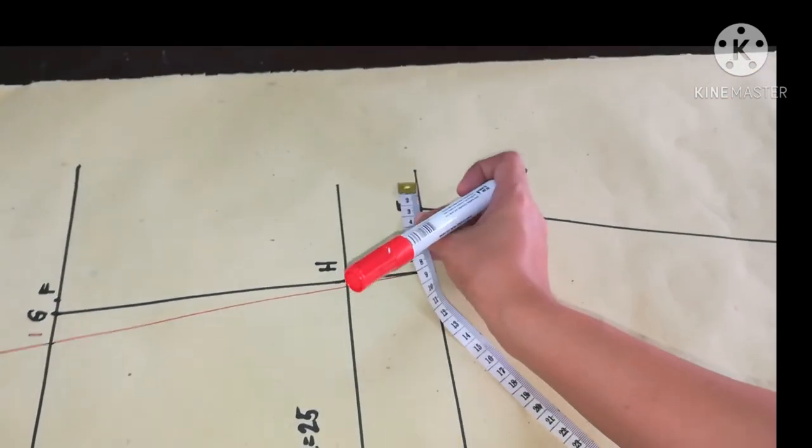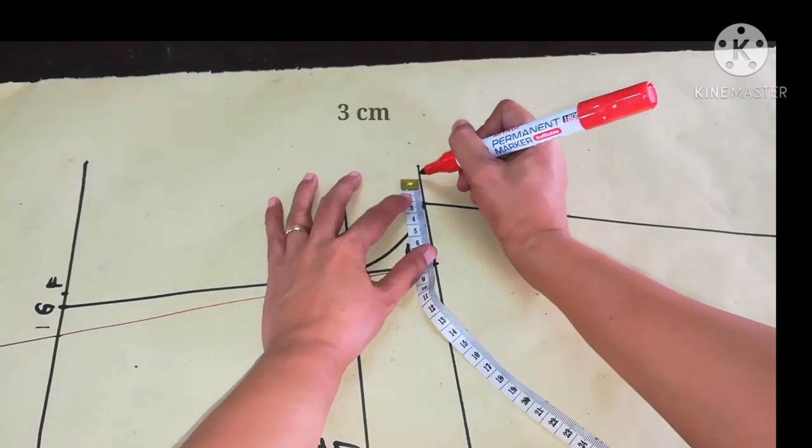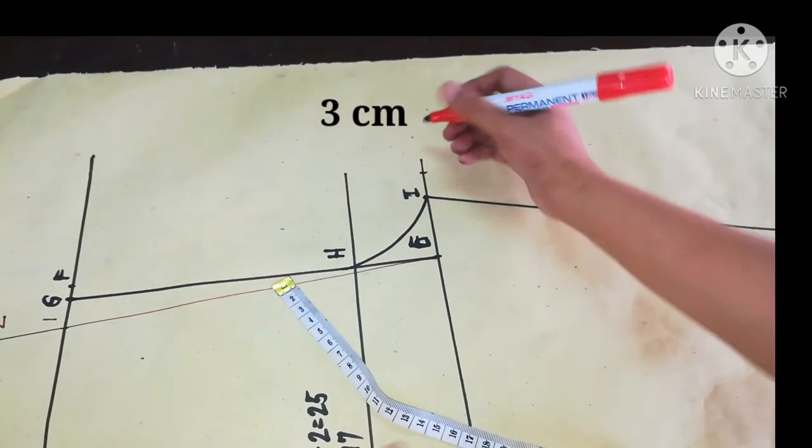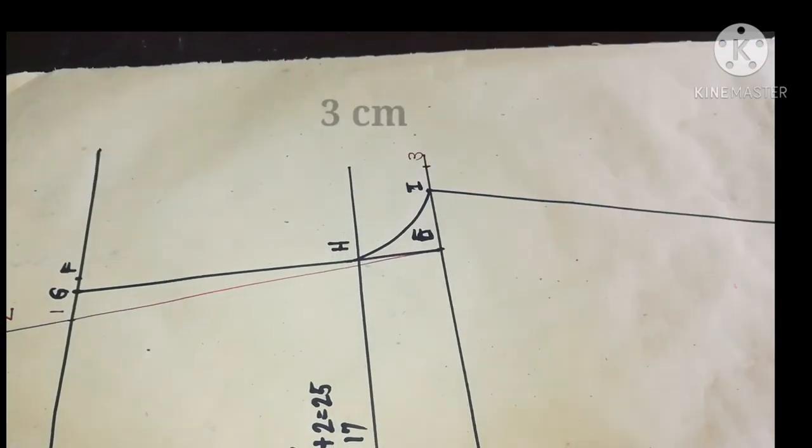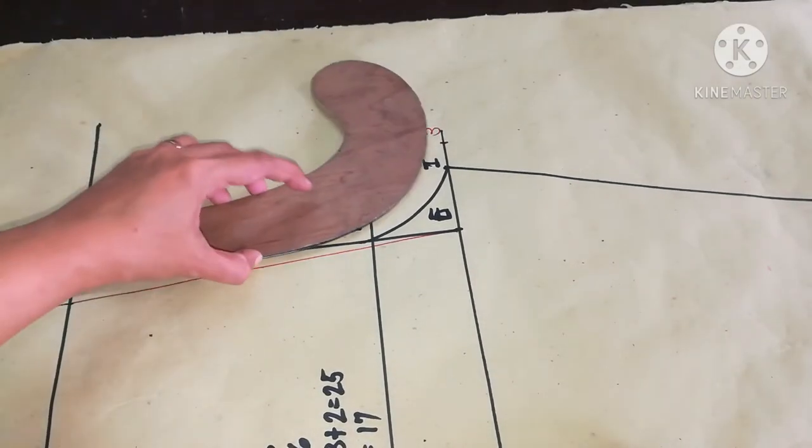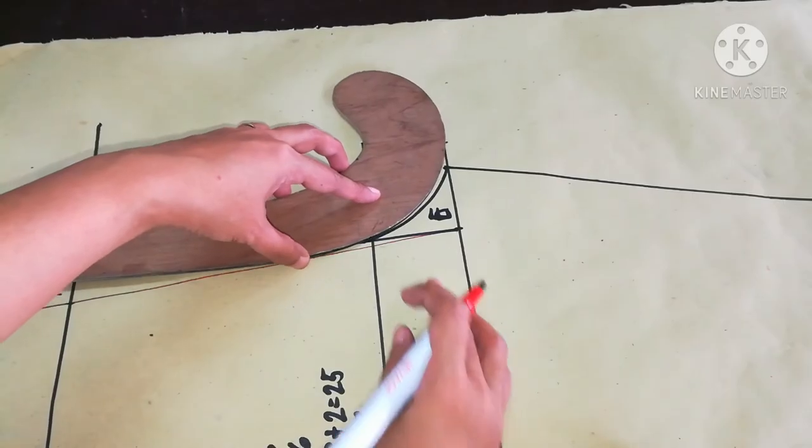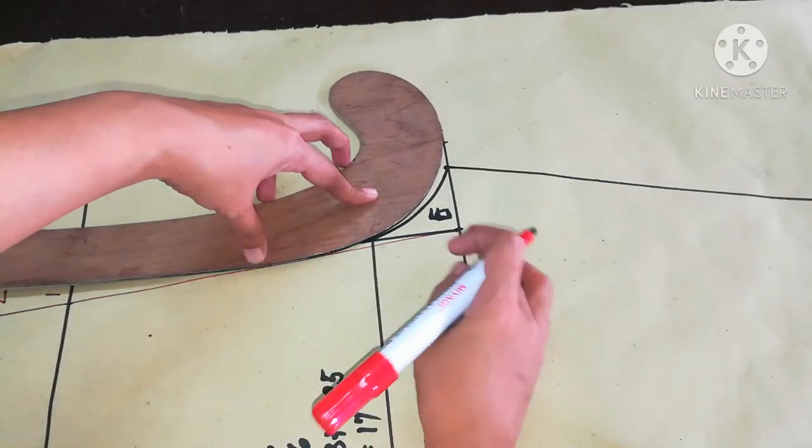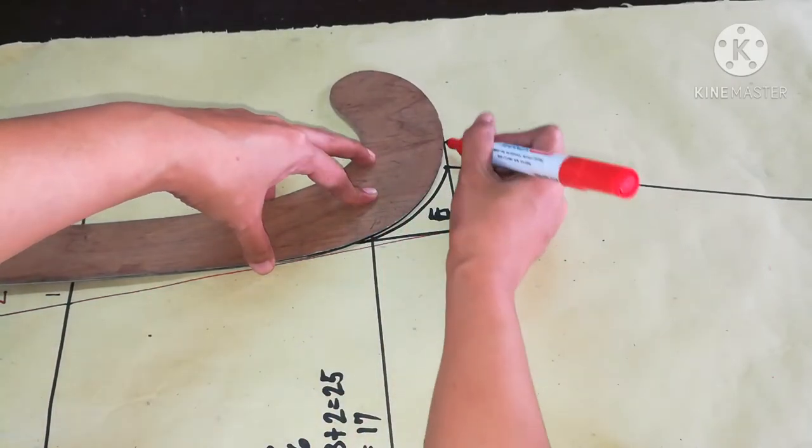Now from point I, measure 3 cm outward and mark it point 3. Then using French curve, connect the back crotch on this line and point 3.